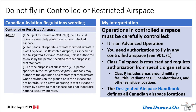901.14: do not fly in controlled or restricted airspace. Operations in controlled airspace must be carefully controlled — any such operations are an advanced operation, so you need your advanced operation pilot certification at least. You also need authorization to fly in any controlled airspace, and rule 901.71 covers that. Class F airspace is primarily for military operations and requires authorization from very specific organizations. Class F also includes areas around military facilities, Parliament Hill, penitentiaries, and other sensitive locations. The designated airspace handbook defines all Canadian airspace locations precisely.